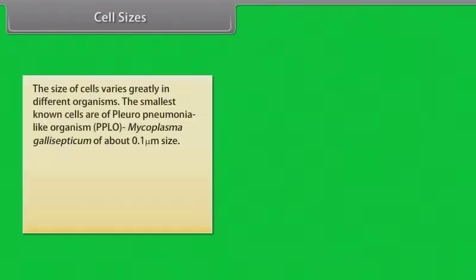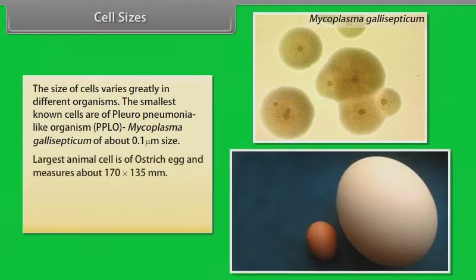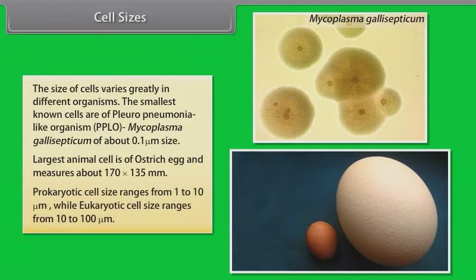The size of cells varies greatly in different organisms. The smallest known cells are of pleuro-pneumonia-like organism, i.e. PPLO, Mycoplasma gallisepticum, of about 0.1 micrometer in size. The largest animal cell is that of the ostrich egg, measuring about 170 by 135 millimeters. Prokaryotic cell size ranges from 1 to 10 micrometers, while eukaryotic cell size ranges from 10 to 100 micrometers.